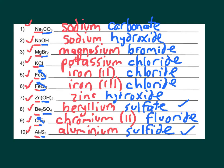I have successfully named each of these substances. Just to review, I'm going to go through all of the names. Sodium carbonate for number one. Sodium hydroxide for number two. Magnesium bromide for number three. Potassium chloride for number four. Iron two chloride for number five. Iron three chloride for number six. Zinc hydroxide for number seven. Beryllium sulfate for number eight. For number nine, we have chromium two fluoride. And for number ten, we have aluminum sulfide.